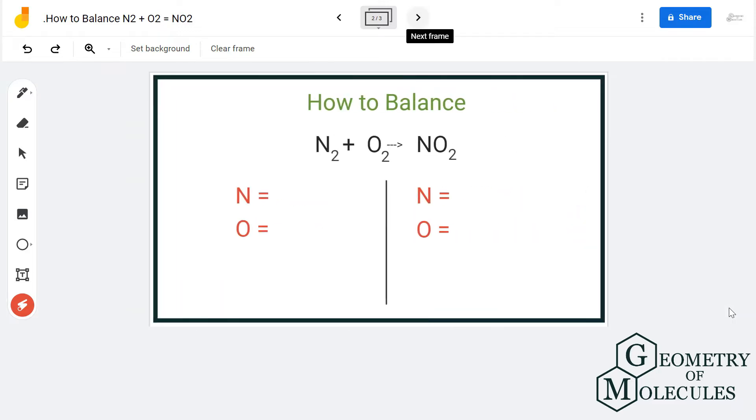To balance this equation we will draw a table for both reactant and product side and try to balance out. So on reactant side we have two nitrogen atoms and two oxygen atoms but when we go to the product side there is only one nitrogen atom and two oxygen atoms.